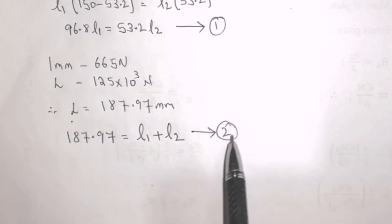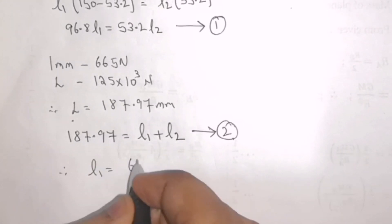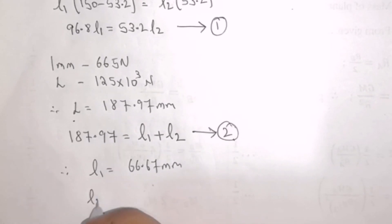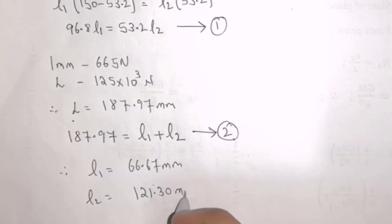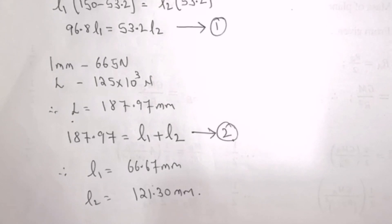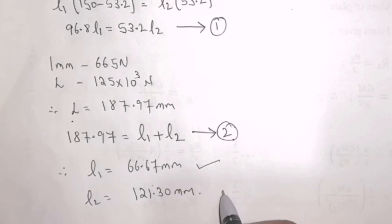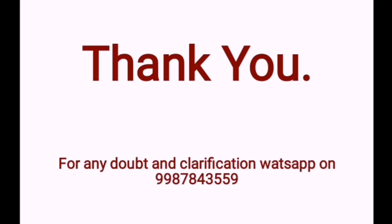Solving equations 1 and 2 simultaneously, we get L1 equals 66.67 mm and L2 equals 121.30 mm. The question asked for the length of fillet weld required to weld the long side of the ISA channel. The long side is the top weld. Hence, the answer is L1 equals 66.67 mm. This completes the solution. Thank you.